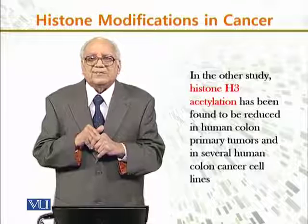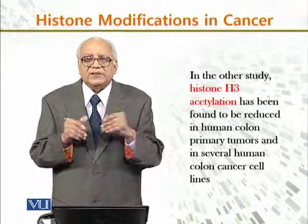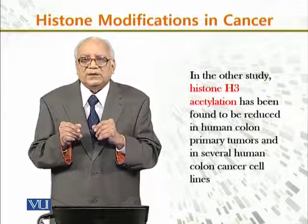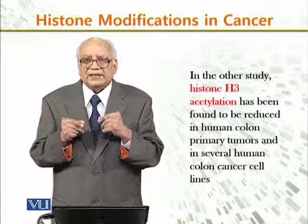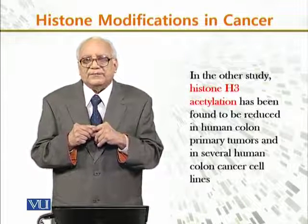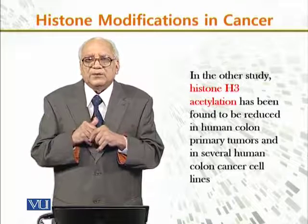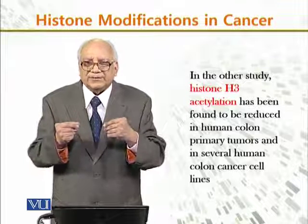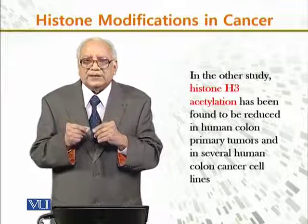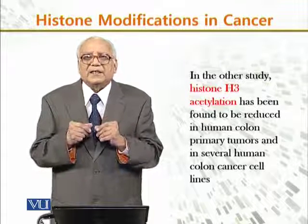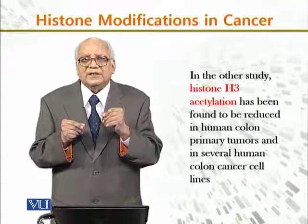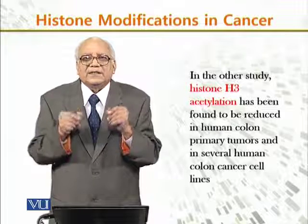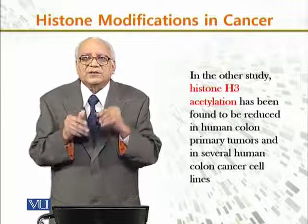In another study, histone H3 acetylation has been found to be reduced in human colon primary tumors and in several human colon cancer cells. So we saw how different acetylation patterns at different positions and codons affect human cancer detection, tumor cell detection, and what the different stages are where they are used to detect these conditions.